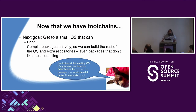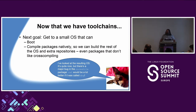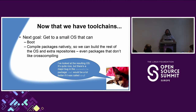Now we have toolchains, and the next step is getting a small OS that can actually boot and is powerful enough to compile the rest of the packages natively. There are still a few things that won't cross-compile — for example, if anyone has ever tried to cross-compile LibreOffice, you may still have some headaches. So there are certainly things we'd still like to do on the target system. What we need is something that boots and has compilers, make, ninja, and those tools available so you can build all the other packages.